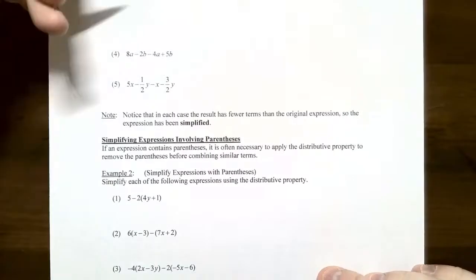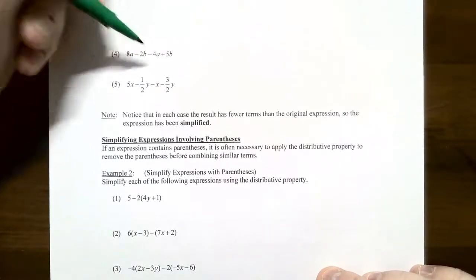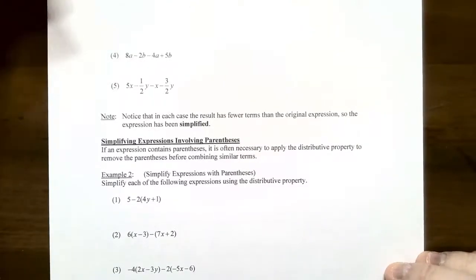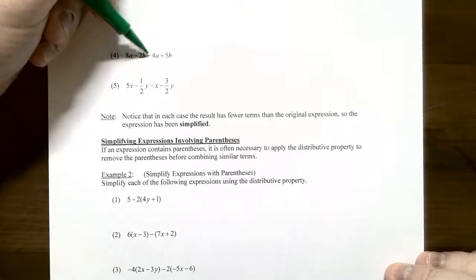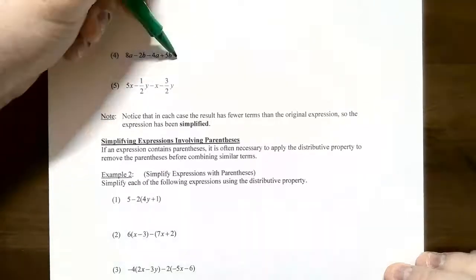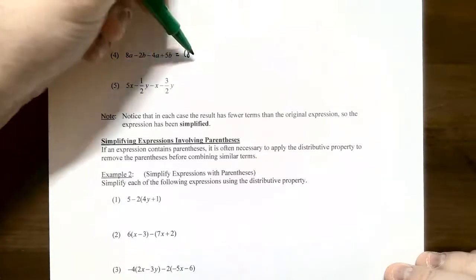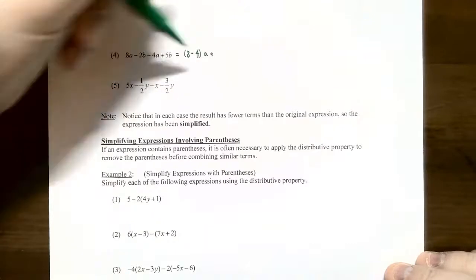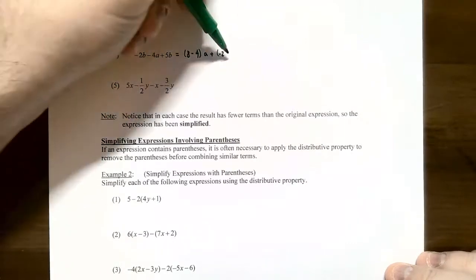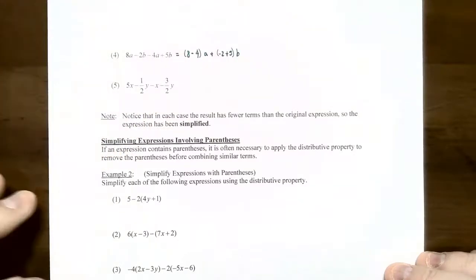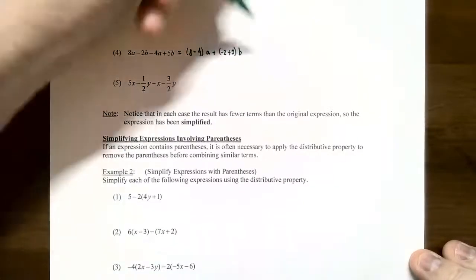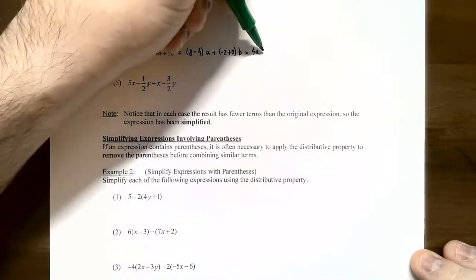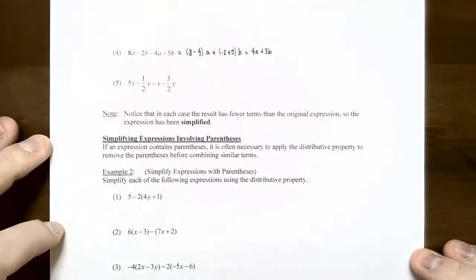Number four: 8a subtract 2b subtract 4a plus 5b. Group the a-terms and b-terms separately. For the a-terms: (8 minus 4) times a. For the b-terms: (negative 2 plus 5) times b. Simplifying: 8 minus 4 is 4a, and negative 2 plus 5 is 3b. So the expression simplifies to 4a plus 3b.